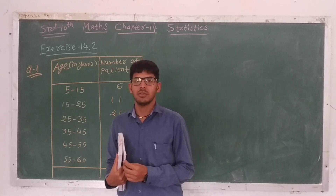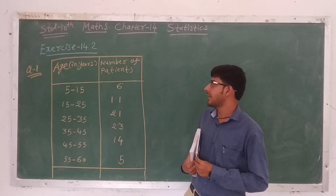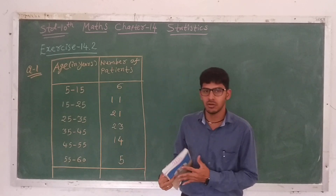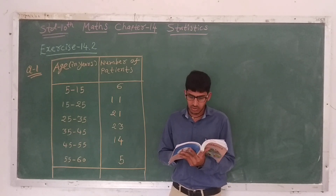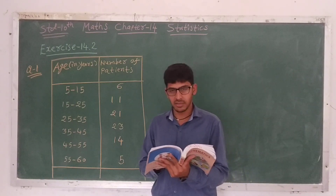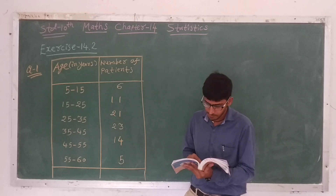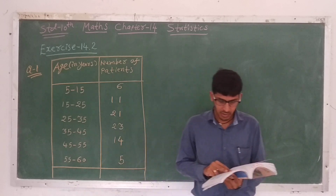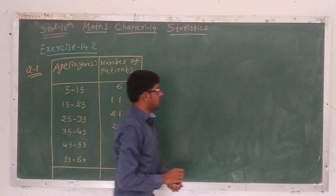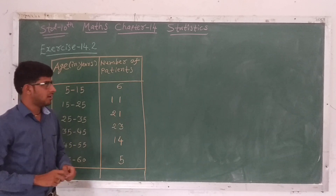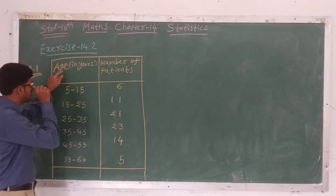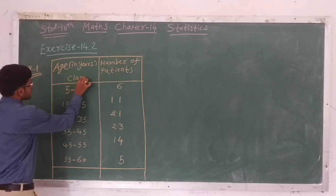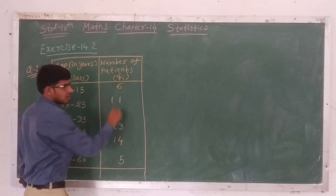Good morning dear students. Last time we had completed exercise 14.1. Now we will start exercise 14.2, question number 1. The following table shows the ages of patients admitted in hospital during a year. Find the mode and the mean of the given data. So we have to find mean and mode of given data. Here age and number of patients are given, so class and frequency are given.